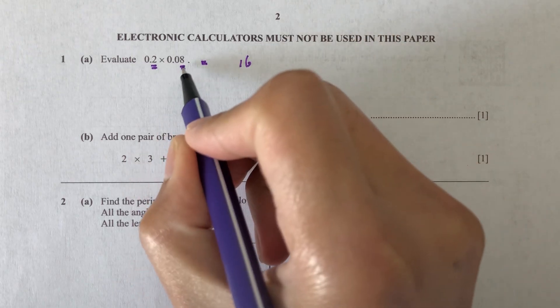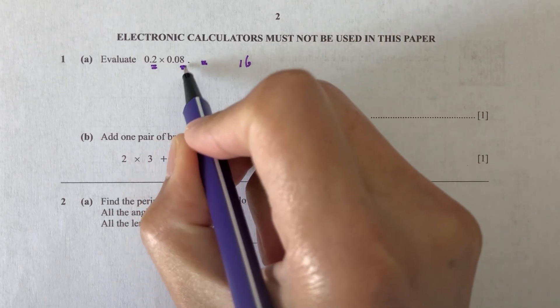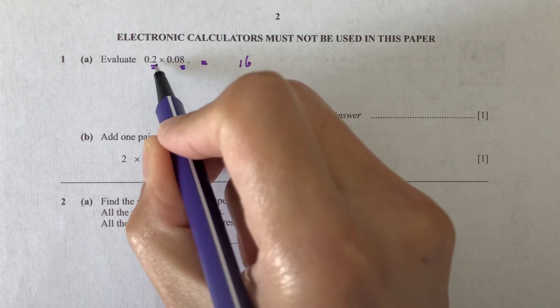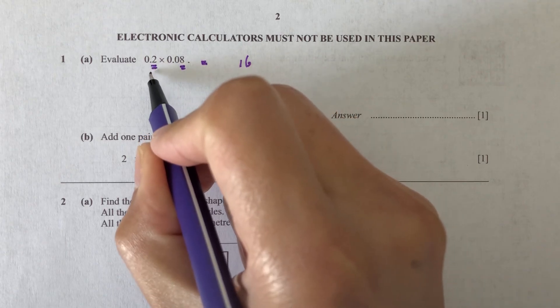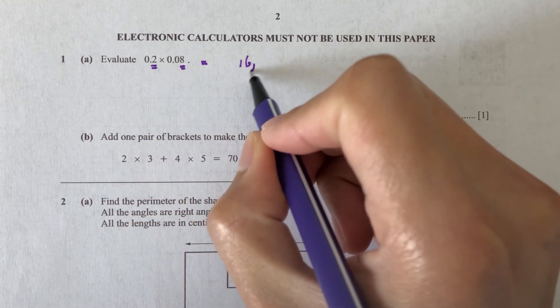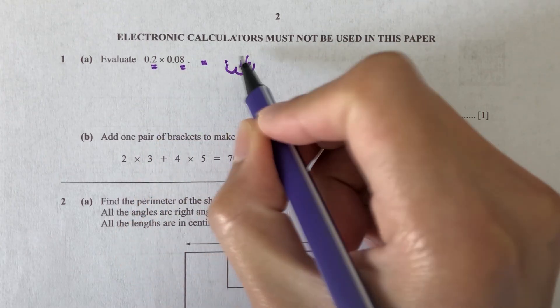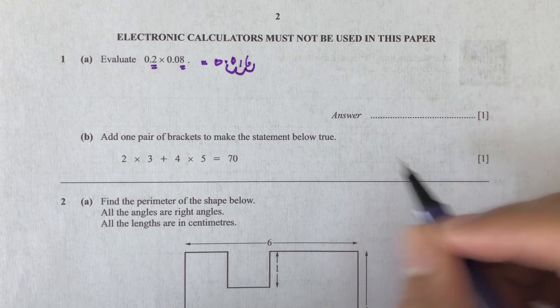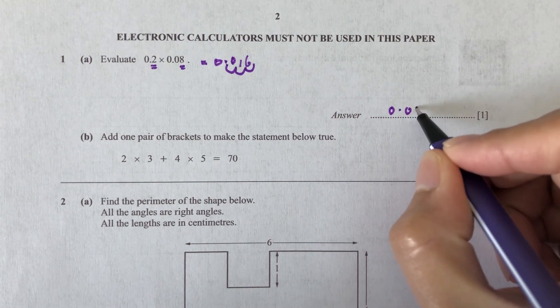And then I count the number of decimal places. So here we have 1, 2 decimal places, and here we have 1. So 2 decimal places plus 1 decimal place is 3 decimal places. So I have 1, 2, 3 decimal places. So that will be my answer: 0.016.